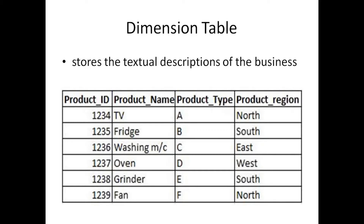The ID is a foreign key to the dimension table. In this fact table, we have the same product ID as a column. There is a product ID linking both tables, so you need to join them using a primary key and foreign key relationship. We need to use the product ID — every product name is unique and identified by its ID.